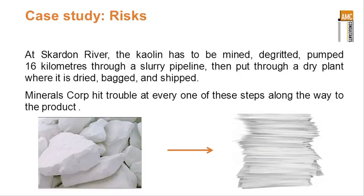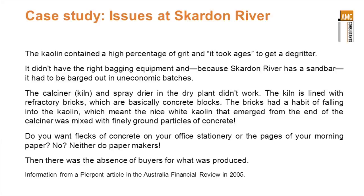The pictures show the kaolin on one side, and the paper which was designed to be a filler — or thought to be a filler — on the right. The kaolin contained a high percentage of grit, and it took ages to get a de-gritter — to actually get the grit out of the kaolin. The company didn't have the right bagging equipment, and because of the location, they had to barge the material over a sandbar in uneconomic batches. So transport was a difficulty for them in getting the material onto a boat to take it to market.